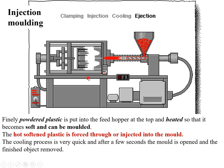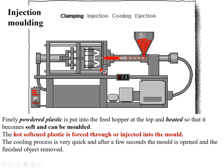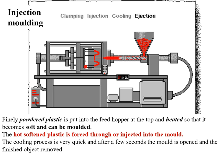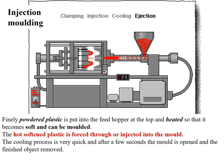The soft, hot plastic is injected into the mold. You can see this injection — this is the mold. When you inject it into the mold, it gets the shape of that mold. The cooling process is very quick, and when you open the mold, the finished object comes out and can be removed. This is called injection molding.